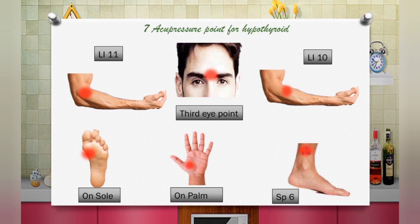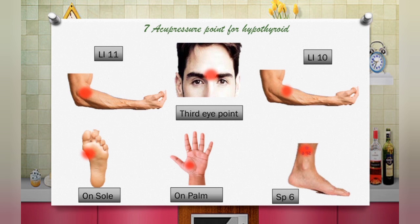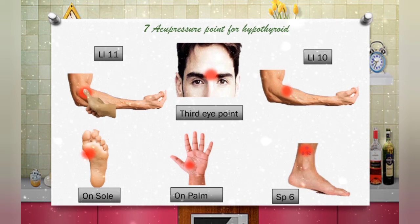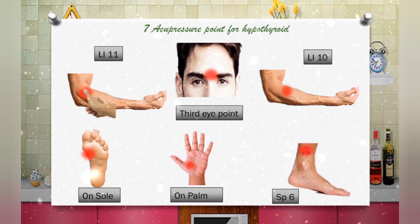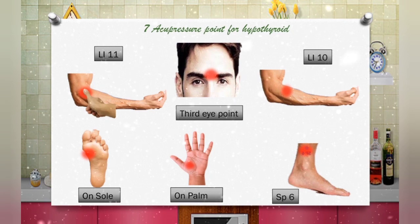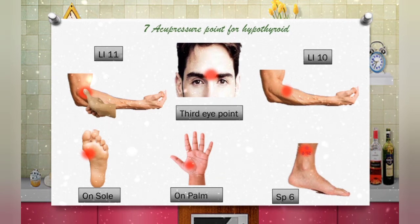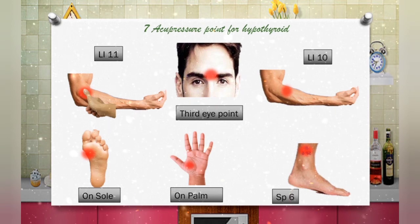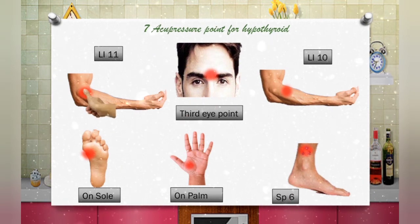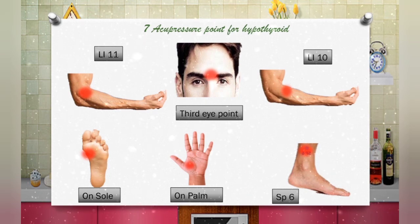As you can see: LI 11, Third Eye, LI 10, SP 6, on palm, and on sole. First, the LI acupressure point — Large Intestine 11 — is a powerful acupressure point for treating hypothyroid problems. It is situated at the lateral edge of the elbow crease. Stimulating this point clears heat and cools the blood. This point is also used for treating fever, sore throat, shoulder pain, knee pain, eye problems, abdominal pain, and digestive disorders.